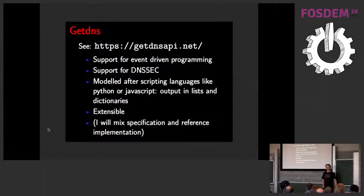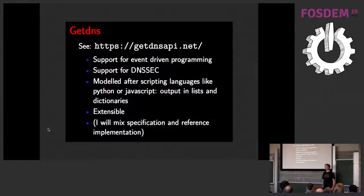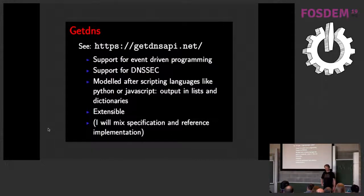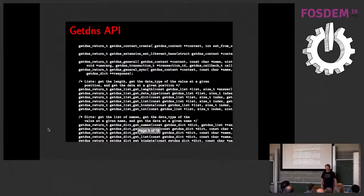A number of years ago, people wanted a new DNS API — not specific to DNSSEC, but a more modern way of sending and receiving DNS packets. Most existing DNS solutions have no support for libevent or other event-based systems, and that was added to the GetDNS API. It does support DNSSEC. It's modeled after Python and JavaScript, so you get lists and dictionaries — data structures that can change without introducing new API calls, making it extensible. There's an API specification and a reference implementation.